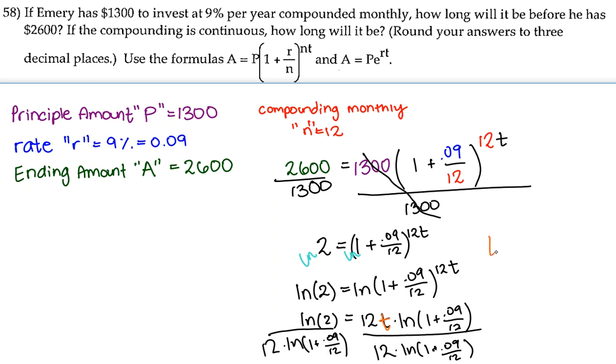And that's going to give us t is equal to the ln of 2 over 12 times the ln of 1 plus 0.09 over 12. Now from here, you would just need to plug this into your calculator. And it's very important that you plug it in correctly. Make sure that the parentheses are where they're supposed to be and the division side is actually dividing the numerator that you want over the denominator that you want.